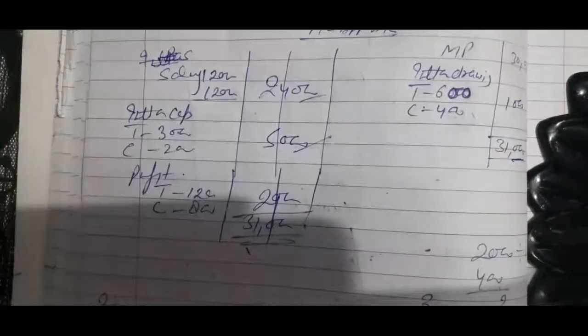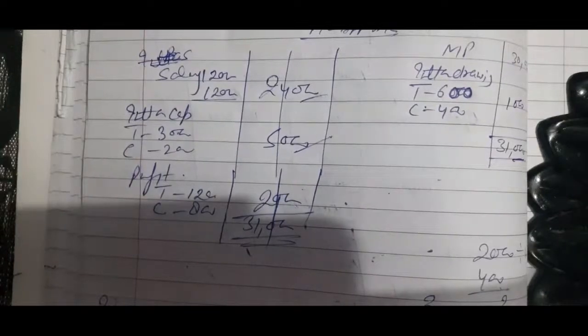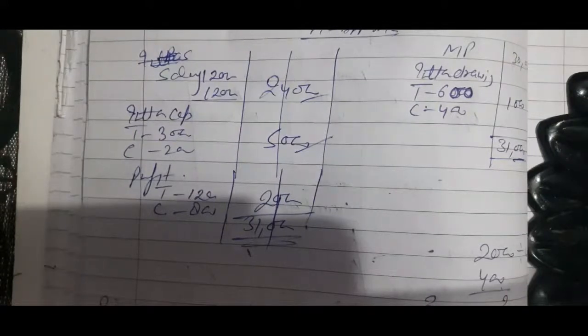So children, today I have explained the numerical question for both fixed capital method and fluctuating capital method. I hope this question is now clear.